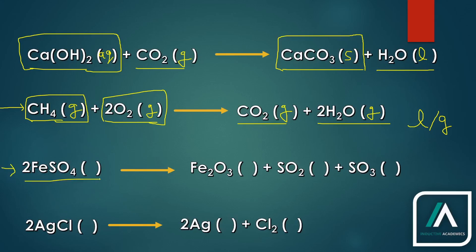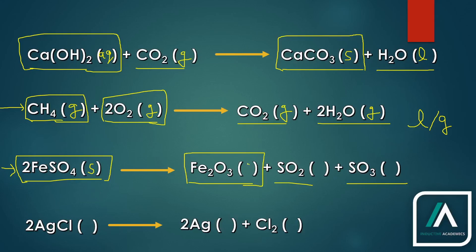The next example: iron sulfate decomposes into iron oxide, sulfur dioxide, and sulfur trioxide — so this is an example of decomposition reaction where one reactant decomposes into three products. Iron sulfate is a salt, so solid. Iron oxide is a metal oxide, so it is going to be solid — this is rust, by the way. Sulfur dioxide is a non-metallic oxide, so it is a gas. Sulfur trioxide is also a gas.